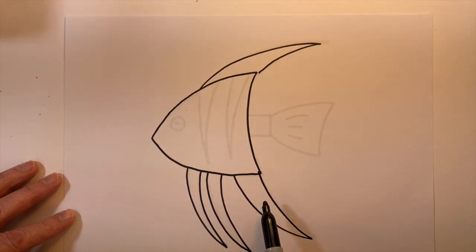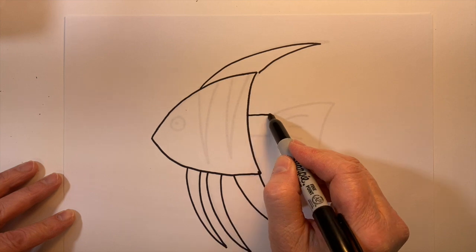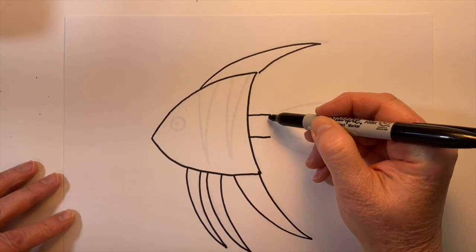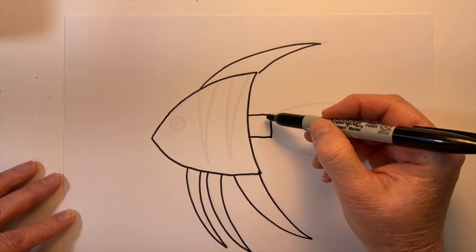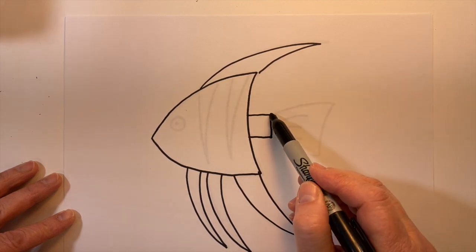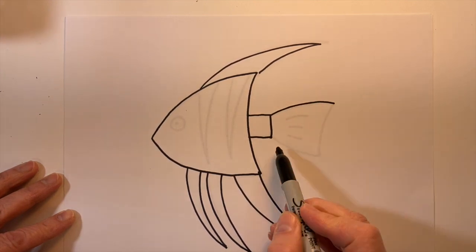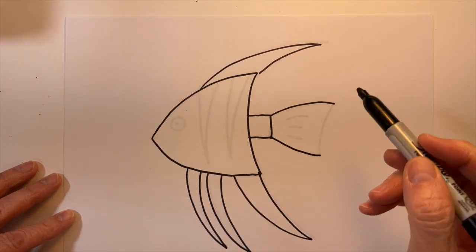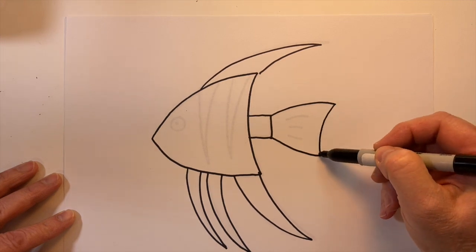This one's a little bit wider and then the back of the angelfish, just horizontal line, a couple horizontal lines and a vertical line and then just some curved lines and attach with another curved line.